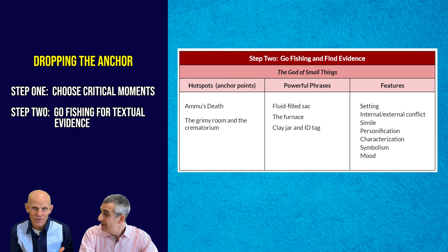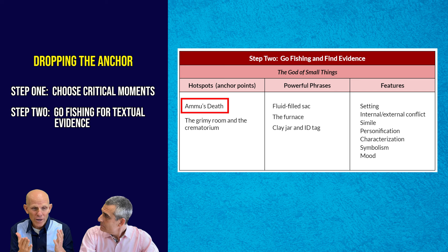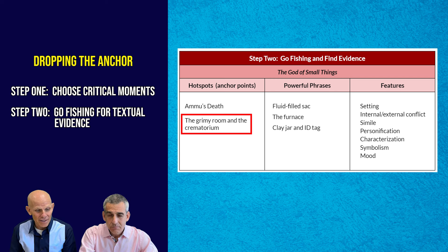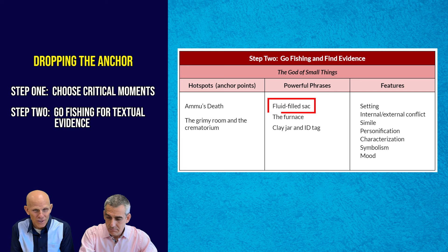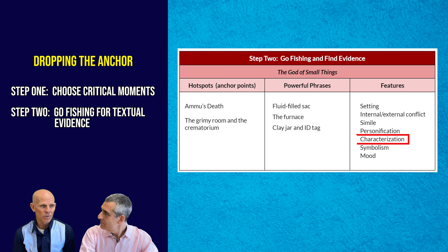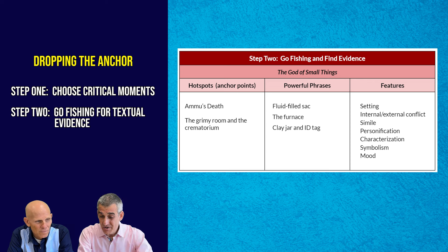With The God of Small Things, looking at the moment of Ammu's death — she dies alone in a very grimy room, cast aside and ostracized as a divorced woman. We find the reference to the fluid-filled sack like her lungs, because she's dying of tuberculosis. We think about the crematorium and the furnace, the clay jar and the ID tag. Within that, we're identifying the setting, the internal and external conflicts, the use of simile, personification, and figurative language, as well as rich characterization — all things Arundhati Roy does in that moment. So you're ready to talk about both content and form in a comparative way.